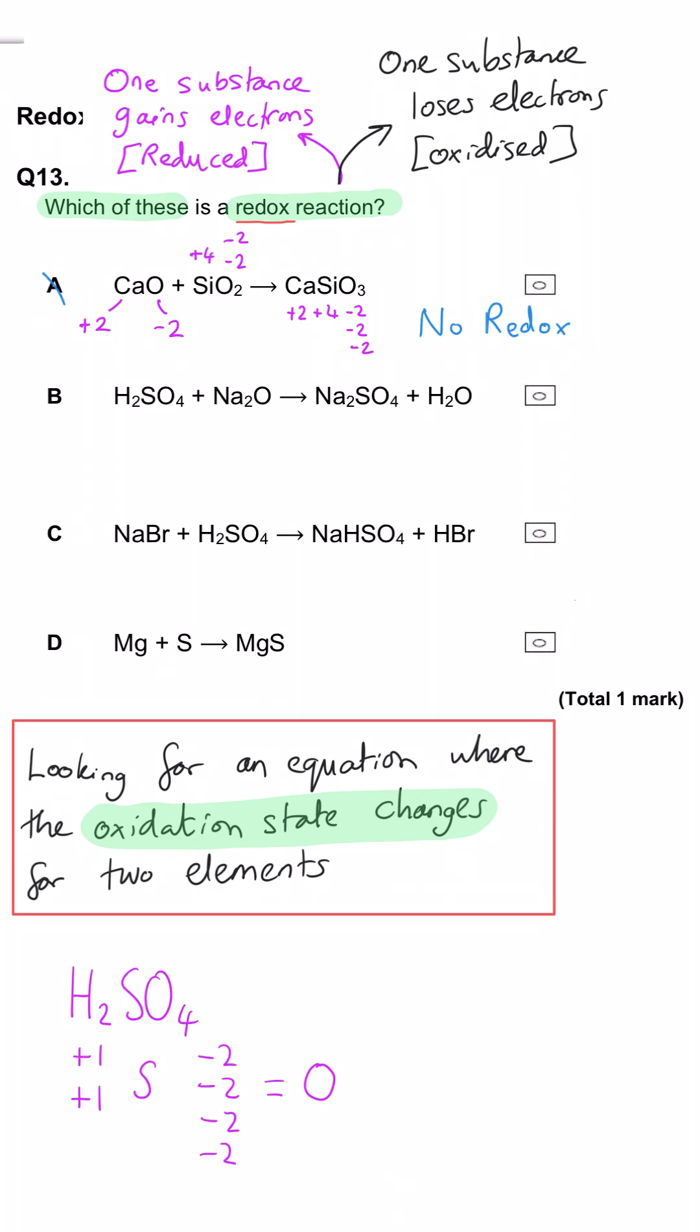In B, the sulfur is plus 6 in H2SO4 and it is still plus 6 in Na2SO4 to balance that total of minus 8 from the 4 oxygen.